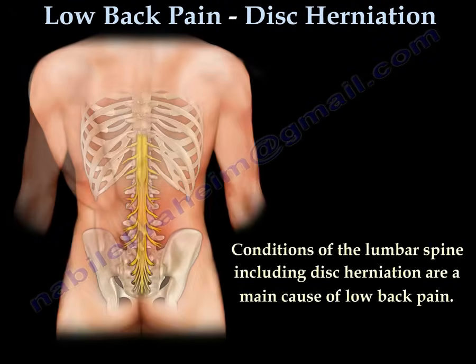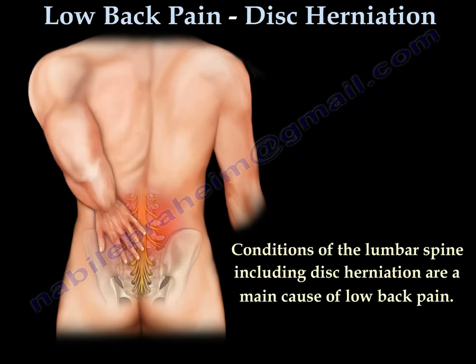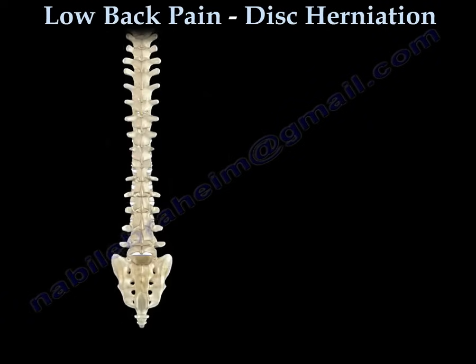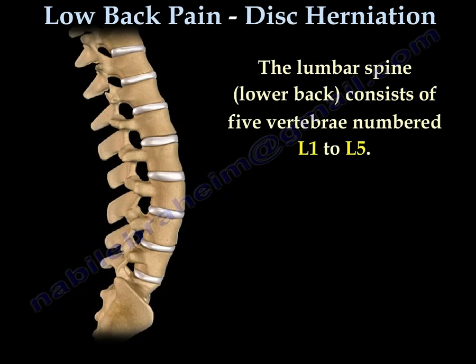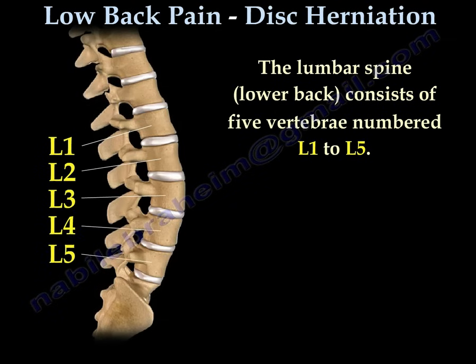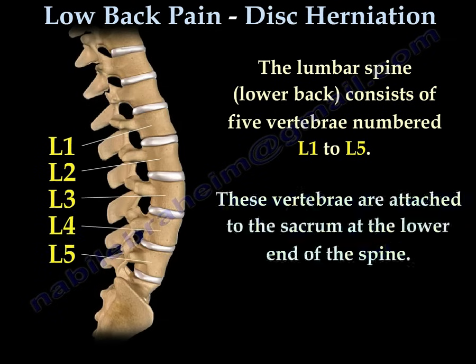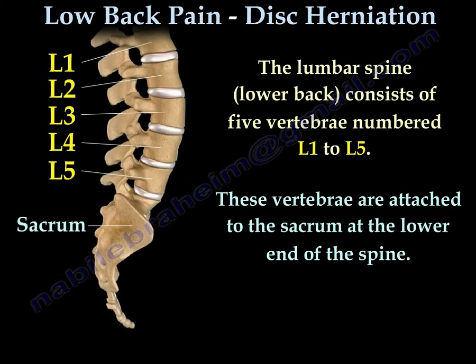Different conditions of the lumbar spine, including disc herniation, are the main cause of low back pain. The lumbar spine, which is the lower back, consists of five vertebrae: L1, L2, L3, L4, and L5. These vertebrae are attached to the sacrum, the tailbone, at the lower end of the spine.